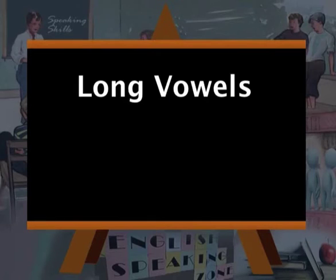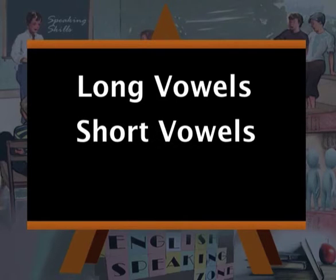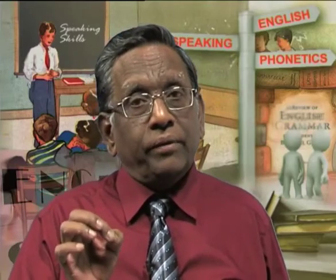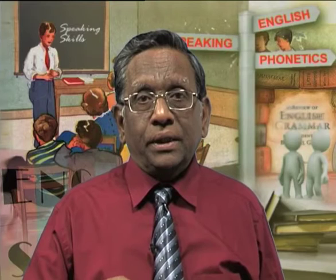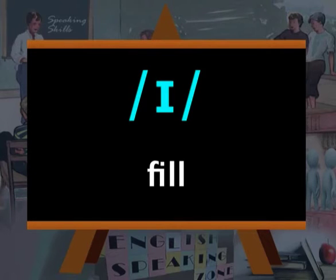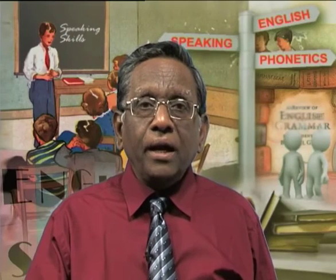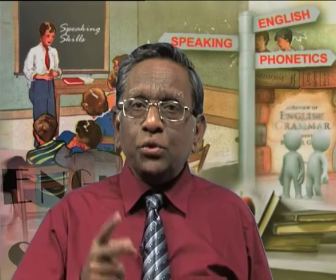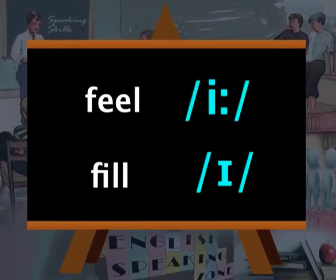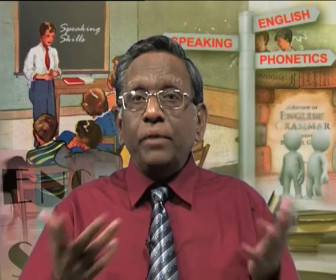What are the various vowel sounds or vowel phonemes of English? We have long vowels, we have short vowels, and we have diphthongs. We have to note that the length of the vowel can differentiate meaning in English. For example, 'feel' (F-E-E-L) and 'fill' (F-I-L-L) — the difference between these two words is brought about just by shortening the length of the vowel. The first word has a long vowel; the second word has a short vowel. So the length of the vowel can change the meaning in English.